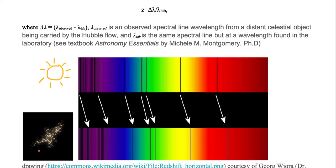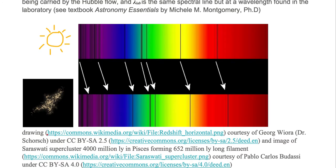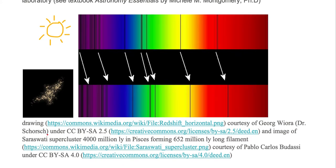Such as this supercluster shown in the bottom left. We're looking at Saraswati supercluster, which is 400 million light years away from Earth in the constellation of Pisces. Notice we have this nice long line here indicating a filament, and that filament is about 652 million light years long.